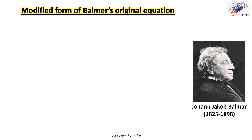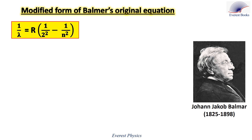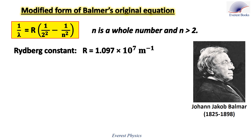In 1885, before the Bohr model, the Swiss teacher Johan Balmer introduced an empirical equation that correctly predicted the four wavelengths. This equation is a modified form of Balmer's original equation made by the physicist Johannes Rydberg. N is a whole number greater than 2, and R is a constant with a value of 1.097 × 10⁷ m⁻¹. Now let's use this equation to calculate the four wavelengths.